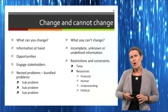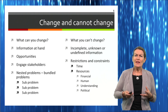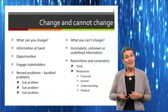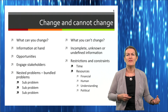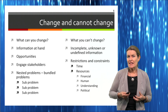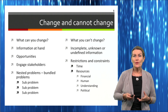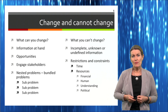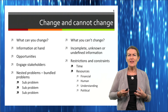So we need to look at what we can change and what we can't change. The information at hand is really important as to how we deal with that problem. Sometimes that information isn't forthcoming; sometimes there's a lot of it and it's very hard to deal with. You've got the whole continuum of lots and lots of information versus minimal information. We need to look at the opportunities — what opportunities can these non-routine problems actually present? Instead of looking at them as something we can't resolve, maybe we can look at the opportunities they present. Engaging stakeholders is quite significant and allows us to get different perspectives on what's actually happening.